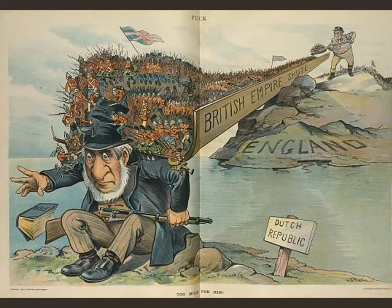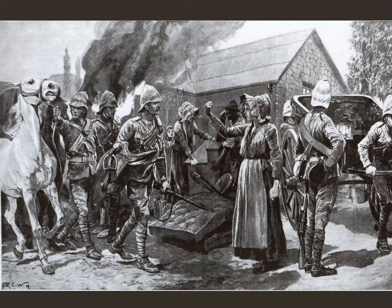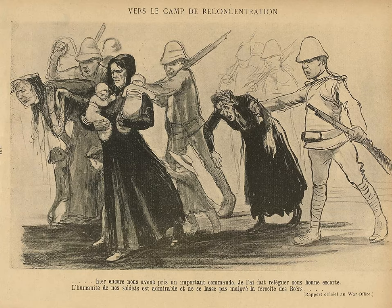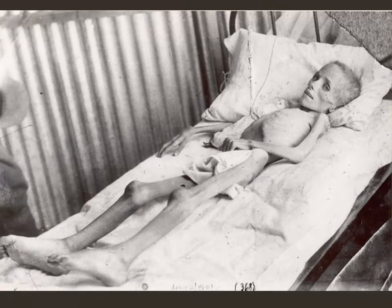In the Boer War, the British don't trust any of the villagers whom they believe are supporting the Dutch Boer fighters. So the British come up with the idea to burn all the villages, round up Dutch Boer women, children, and non-combatants, concentrate them in camps — and in doing so, coin the term 'concentration camp.' There are stories of horrible and terrible things happening, including starvation, which becomes a major international cause as images of starving children in these British concentration camps spread around the world.